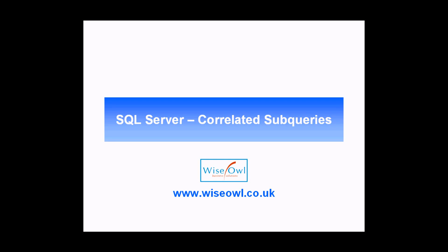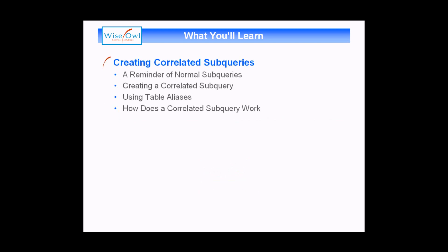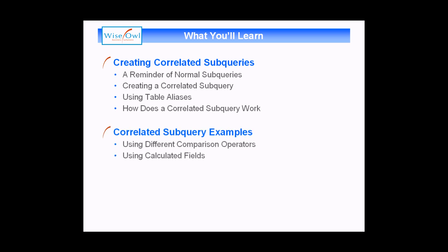Welcome to this SQL tutorial. In this session we're going to teach you how to work with correlated subqueries in Microsoft SQL Server. What we'll cover is first how to create correlated subqueries. We'll start with a reminder of how normal subqueries work and then show you how to convert a normal subquery into a correlated subquery. We'll explain the importance of using table aliases, and when we run the query we'll try to explain how it actually works. When we've done that we'll finish the video with a couple of other examples of correlated subqueries.